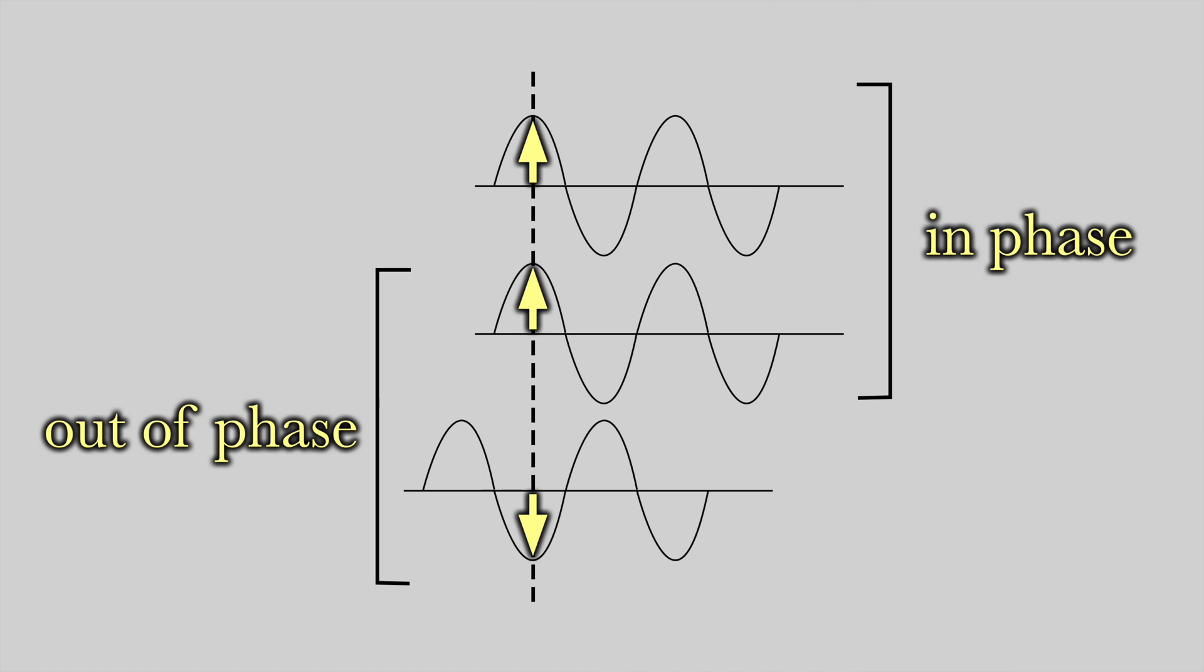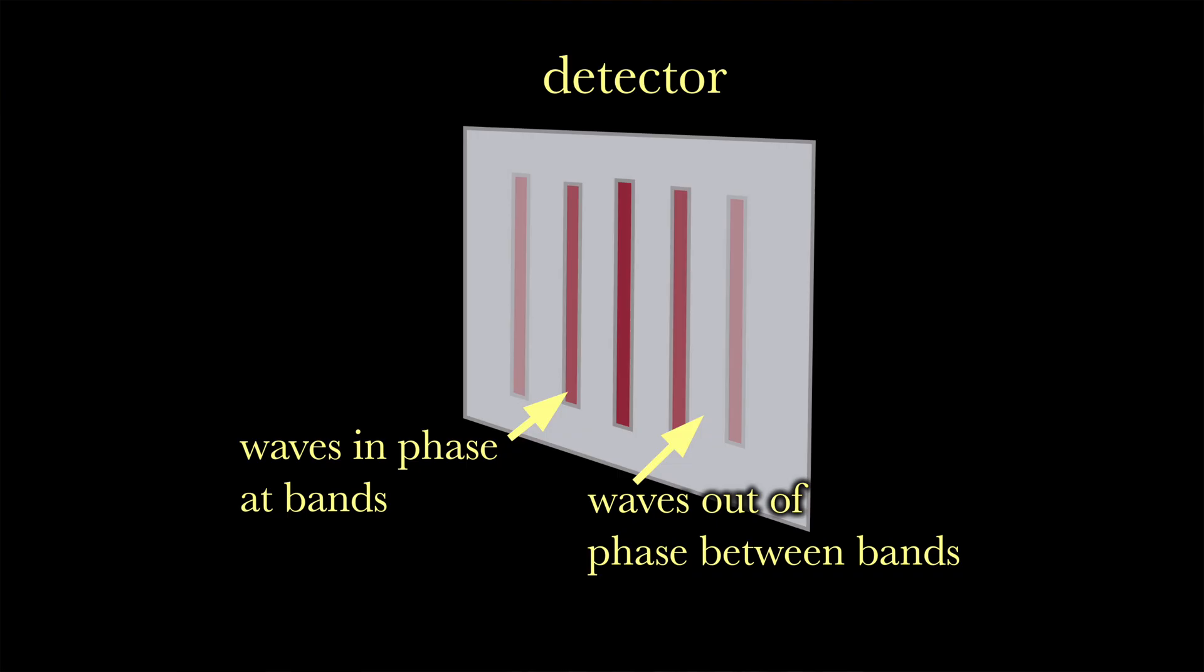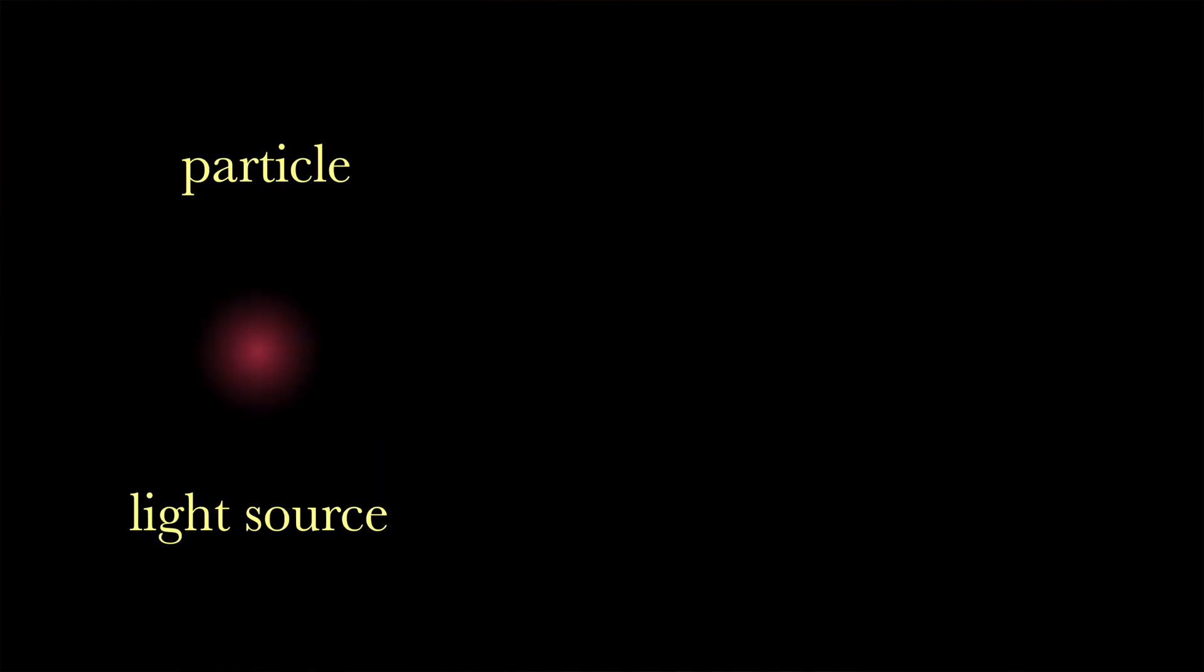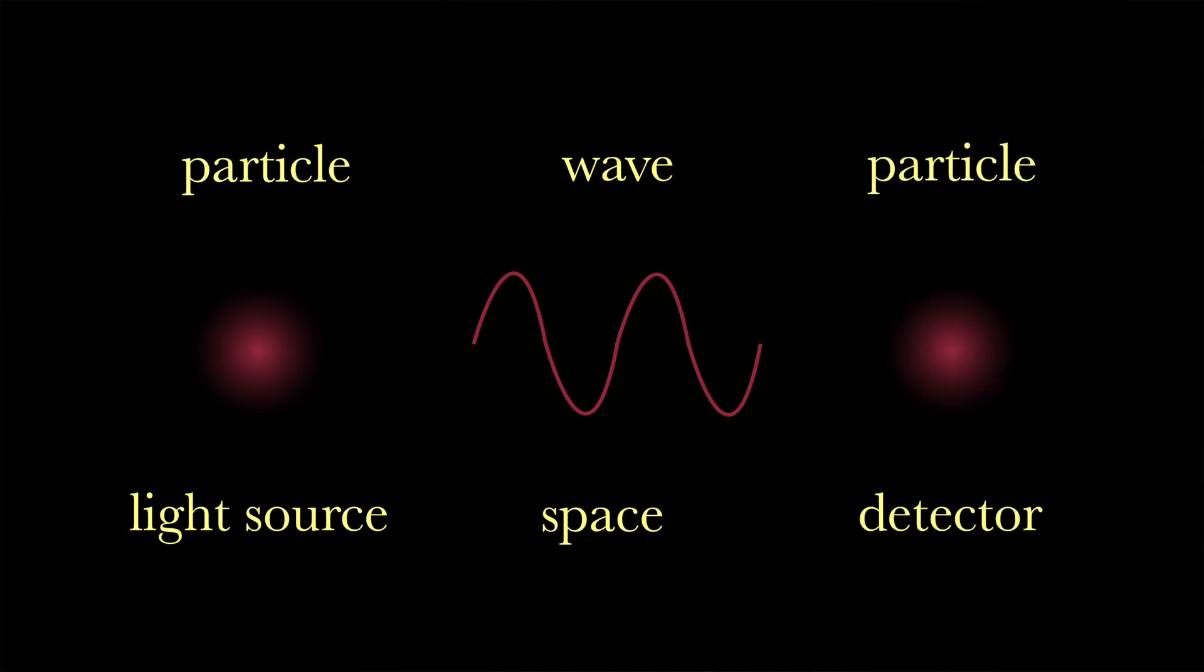According to the Copenhagen interpretation, bands form as a result of light traveling through the slits as waves. The waves from the two slits either add together when they are in phase, or subtract when they are out of phase. The light has a high chance of striking the film when the waves are in phase, and a low chance of hitting it when they are out of phase. As a result, light begins as particles, moves as waves through the slits, and then returns to particles when they strike the detector.